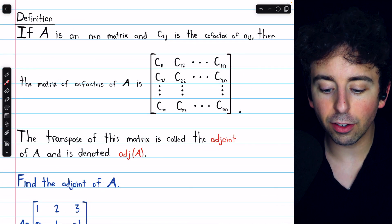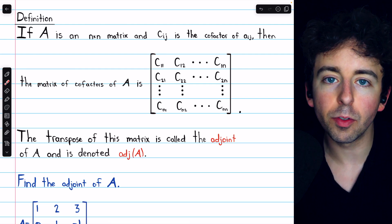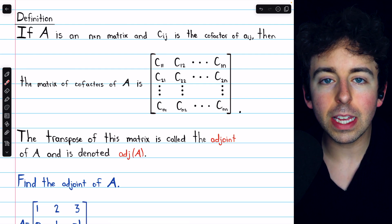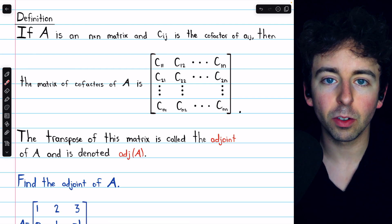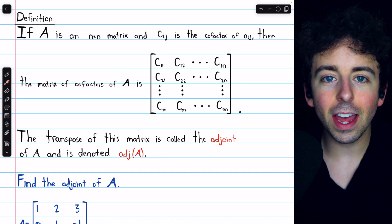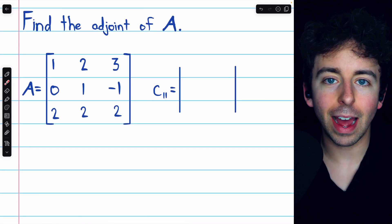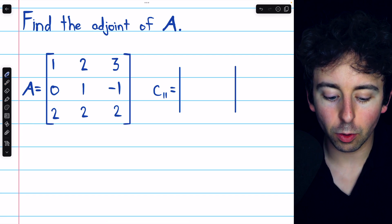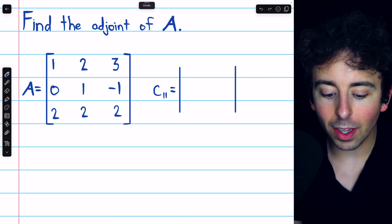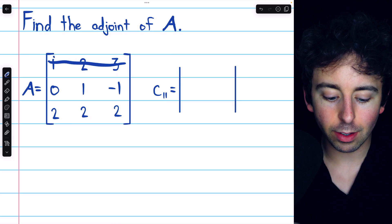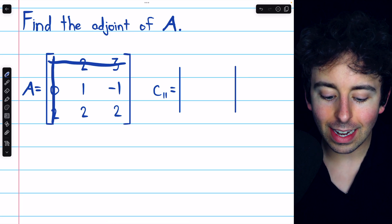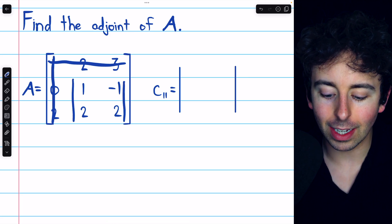The adjoint is the transpose of the matrix of cofactors, so we must begin by finding all cofactors of the matrix A and then putting those all in a matrix. As a quick recap on cofactors, to find the cofactor of the first entry, we must eliminate that entry's row and column and then take the determinant of the remaining submatrix.